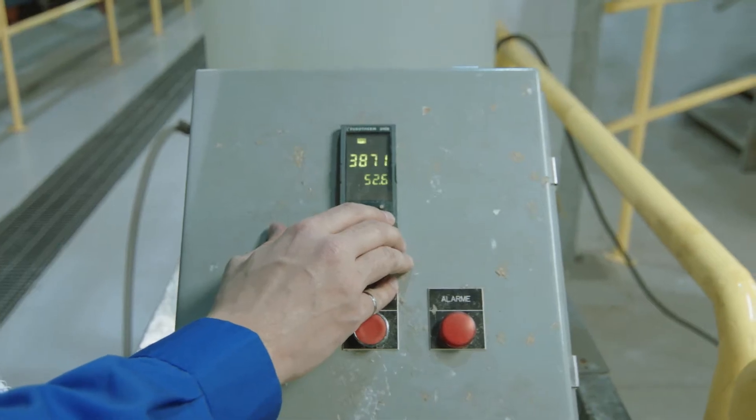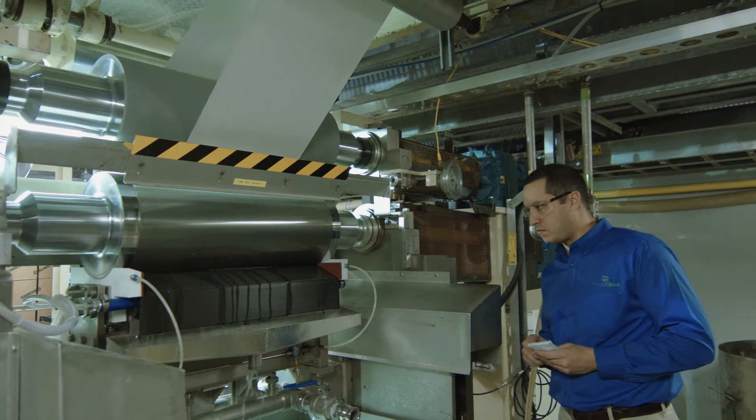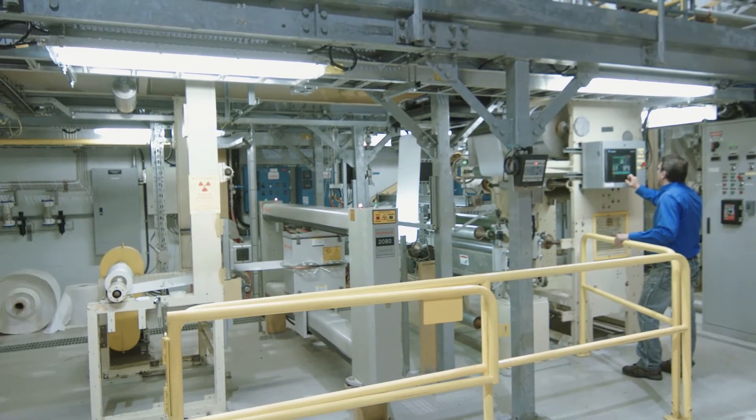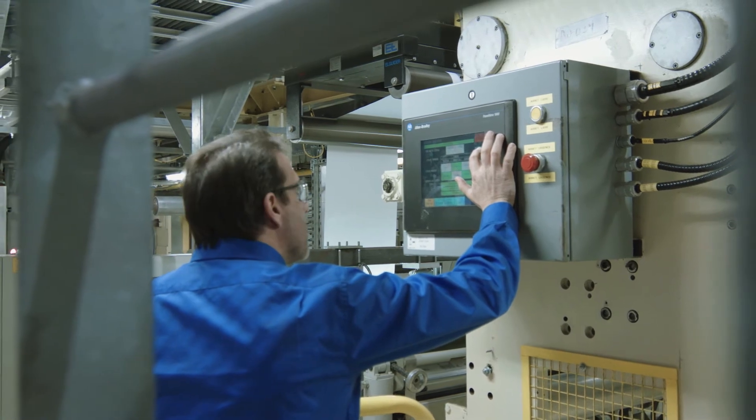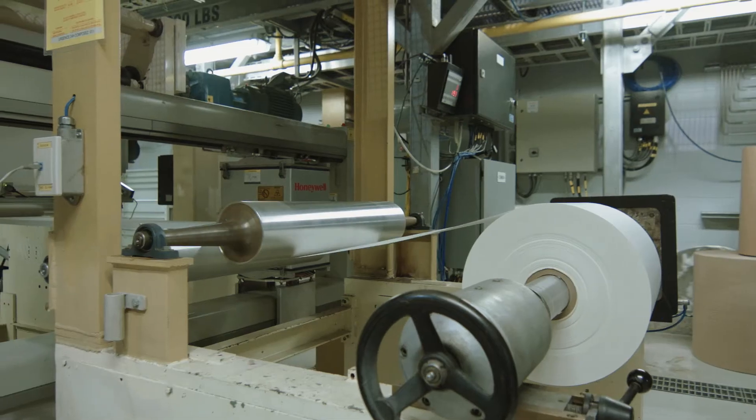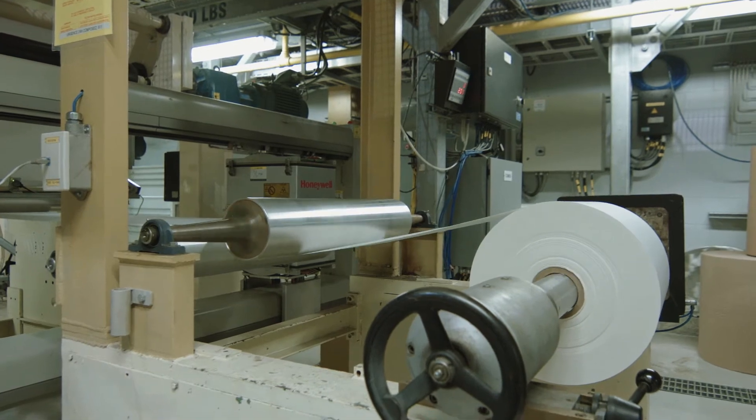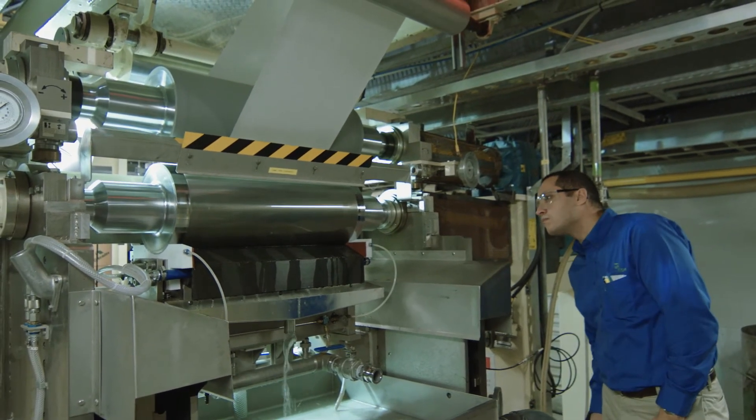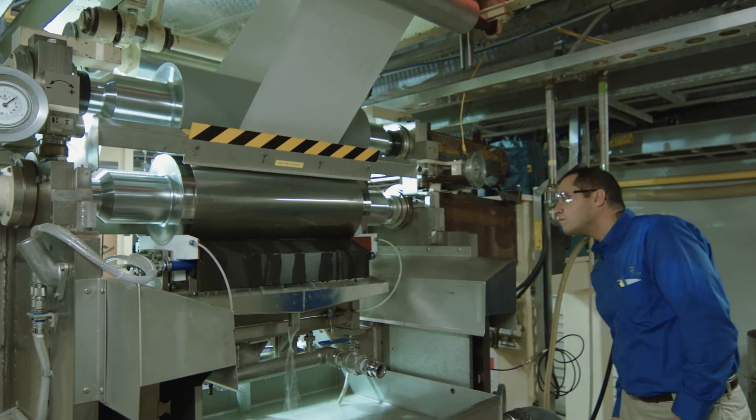The bacteriophage solution is sent to the transfer tank. Drive speeds are adjusted to 360 meters a minute. Base paper arrives at the surface treatment machine where it is unwound up to the coating station. The bacteriophage solution is then transferred onto the paper.